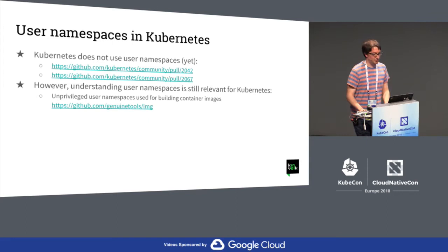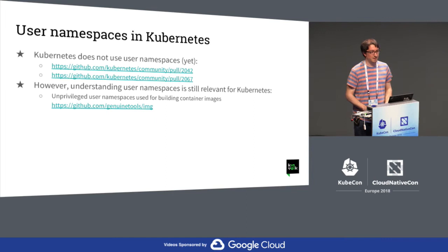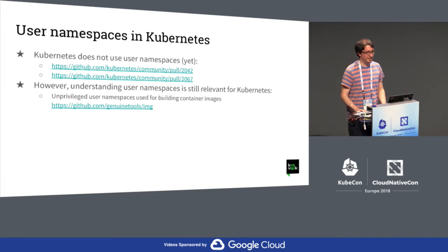In Kubernetes, we don't have a user namespace yet, but this is something which is discussed in those issues and pull requests, including very recently, so at some point we will have that. And even if it's not relevant for Kubernetes yet, it's still interesting to know about because you can run applications inside the pod on Kubernetes and applications can use unprivileged user namespaces to do further containing or sandboxing. An example of that is the tool img — a tool that doesn't require any privilege to create a new Docker image.